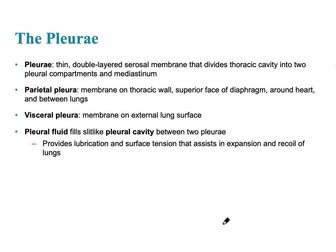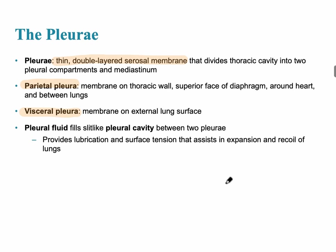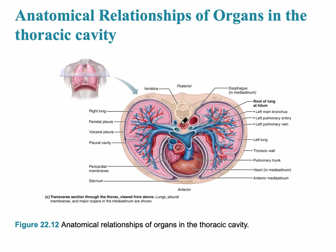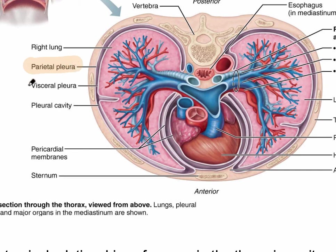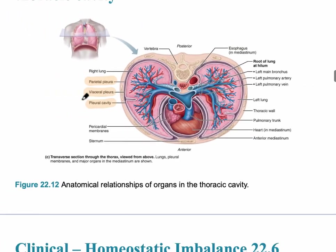The pleura is a thin double-layered serosal membrane — a wet membrane that divides the thoracic cavity into two compartments. The parietal pleura is the more superficial membrane, while the visceral pleura is the membrane directly on the external surface of the lungs, allowing the lungs to glide over the thoracic wall during breathing. The parietal pleura is in contact with the ribs, the visceral pleura is deeper in direct contact with the lungs, and the space between them is the pleural cavity.